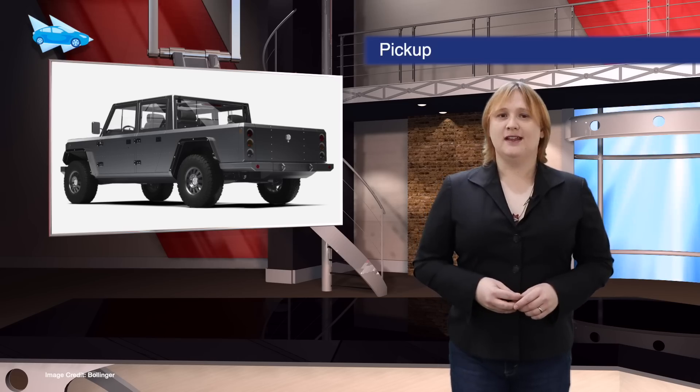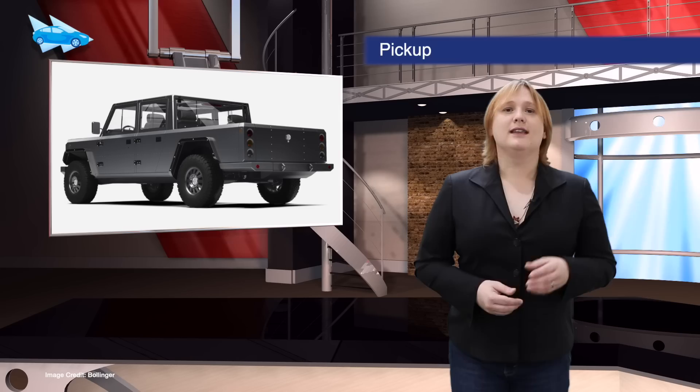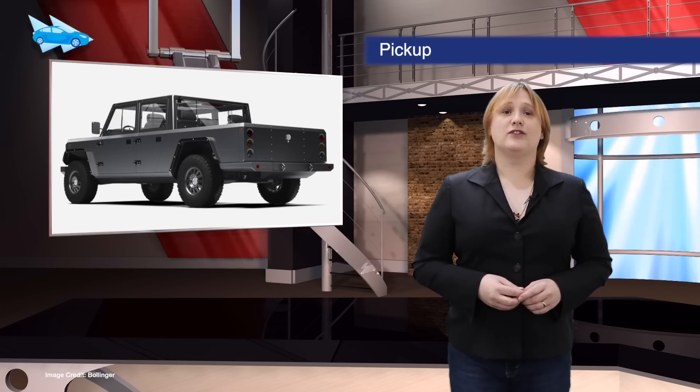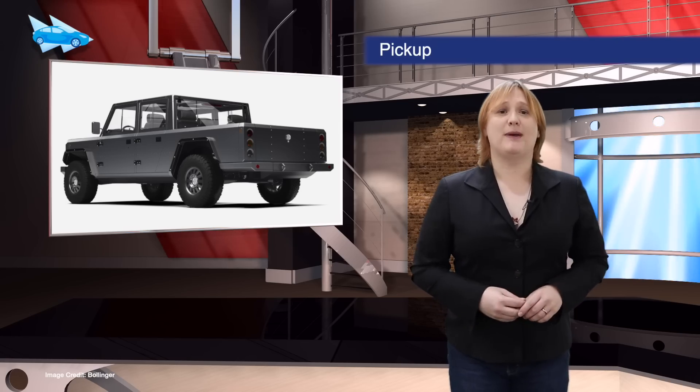Bollinger has announced a new variant of its rugged electric utility truck, the Bollinger B2 pickup. Larger than the B1, it will include a one hundred and twenty kilowatt hour battery pack, but it will have the same construction and features as the smaller sibling, just with a pickup bed too.